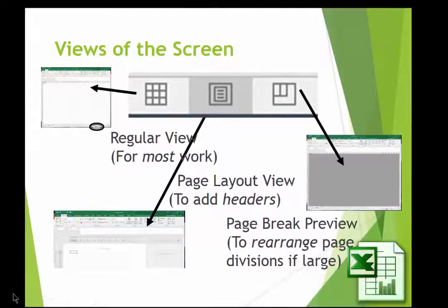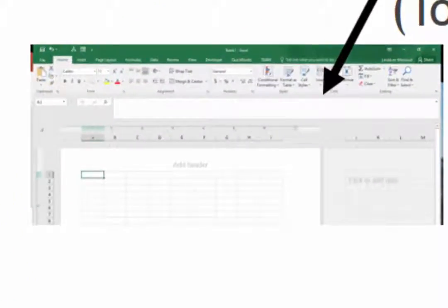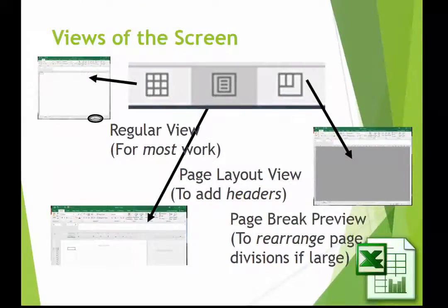The second one is the page layout view, which allows you to get into the headers if you need to have a header, footer, page number, or something on your document. The third, which we won't use too much in the beginning, allows you to rearrange the page breaks if you have a large spreadsheet — that would be the page break preview. Those are up on the View tab or down in the bottom right-hand corner.